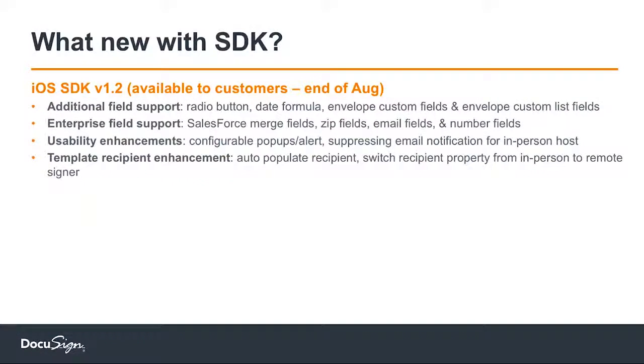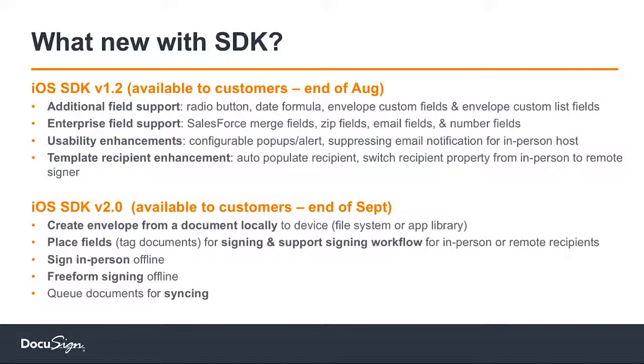Anything new or upcoming for developers? Based on feedback, we've made enhancements: we added additional tab support — for example, button fields and date formula fields — and advanced recipient controls, including the ability to switch recipient type. Currently, most SDK flows are template-driven — you need a template to kick off the workflow. But in future, we want the SDK to be driven by any document, on the local device or cloud storage, so you can start signing based on a document rather than a template. That second version releases at the end of next month.